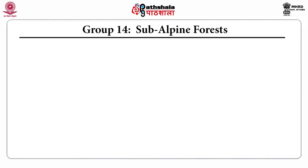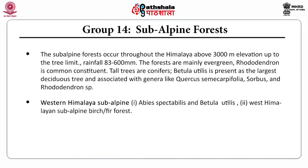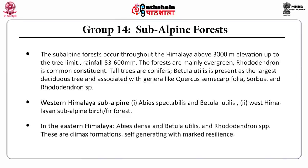Group 14 is the subalpine forests. These forests occur throughout the Himalaya above 3,000 meter elevation up to the tree limit. Rainfall is low. The forests are mainly evergreen. Rhododendron is a common constituent. Tall trees are conifers. Betula utilis is present as the largest deciduous tree, associated with genera like Quercus semicarpifolia, Sorbus, and Rhododendron species. Western Himalaya subalpine forests are characterized by Abies spectabilis and Betula utilis. The second type is the West Himalayan subalpine birch and fir forest. In Eastern Himalaya, Abies densa and Betula utilis and Rhododendron species are present. These are climax formations, self-generating with marked resilience.